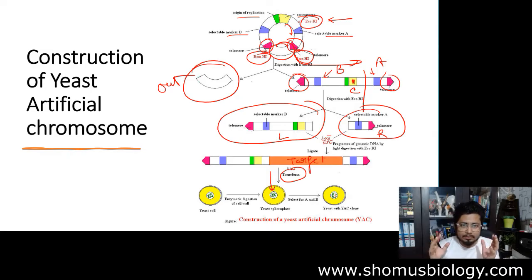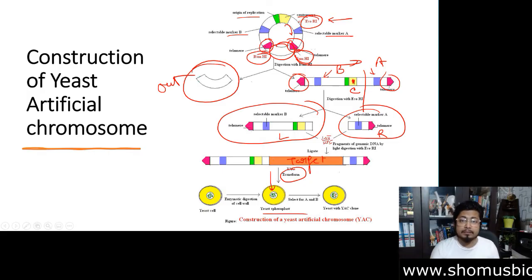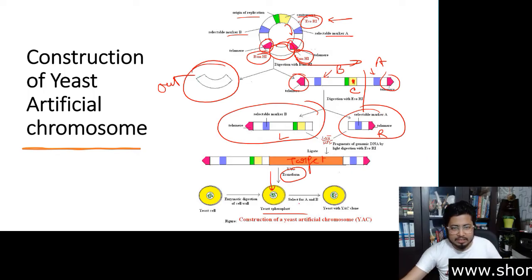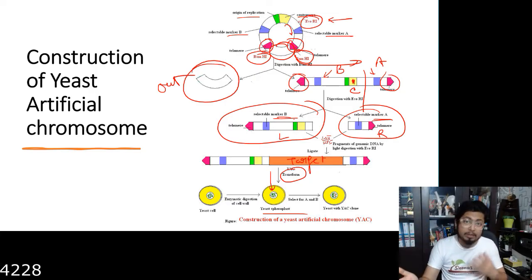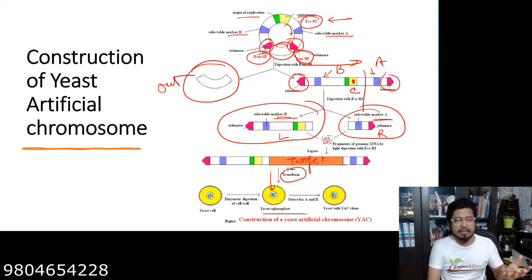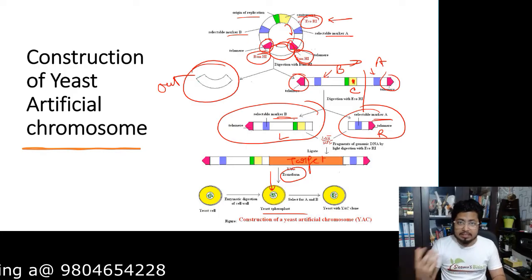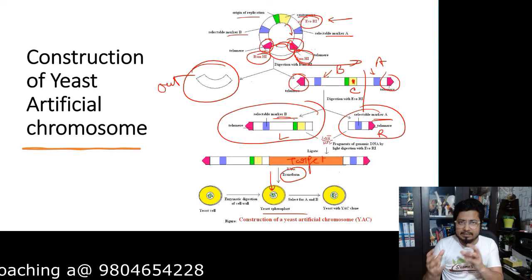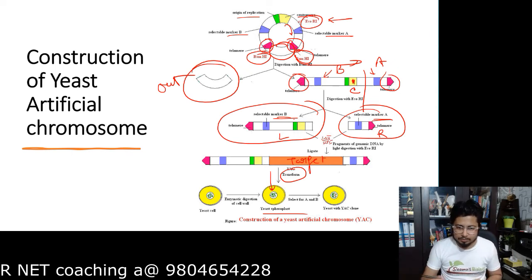Then we transfer this modified Yeast artificial chromosome or modified YAC inside of the Yeast cell. We call it spheroplast, Yeast spheroplast. Once we move it, transfer it, then we can select either the fragment based on selectable marker A or selectable marker B. The selection can be done based on the presence of selectable marker A or selectable marker B. In this case, the selectable marker can be antibiotic resistance gene. We can easily use either antibiotic resistance, for example, ampicillin resistance or tetracycline resistance. Based on that, we can find out, we can siphon out the target cell with this recombinant Yeast artificial chromosome or without the Yeast artificial chromosome.